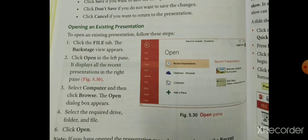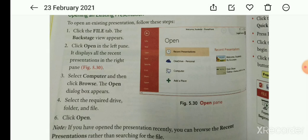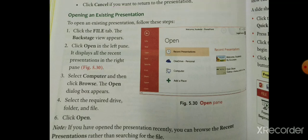Opening an existing presentation — to open an existing presentation, follow these steps। First, click the File tab — Backstage view appears। File tab पर click करना पड़ेगा। Click Open in the left pane — left pane में Open पर click करना पड़ेगा। It displays all the recent presentations in the right pane।